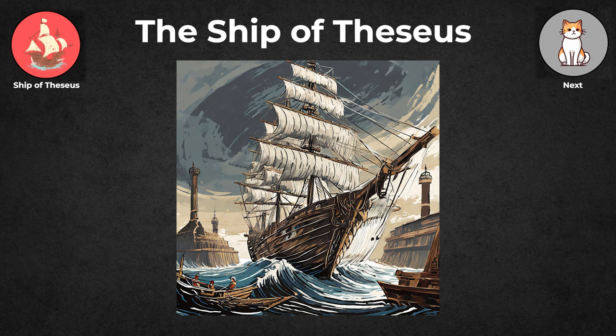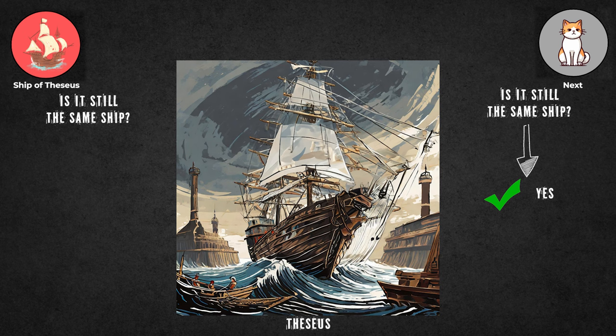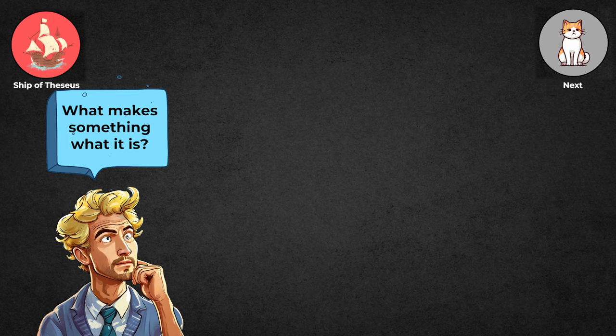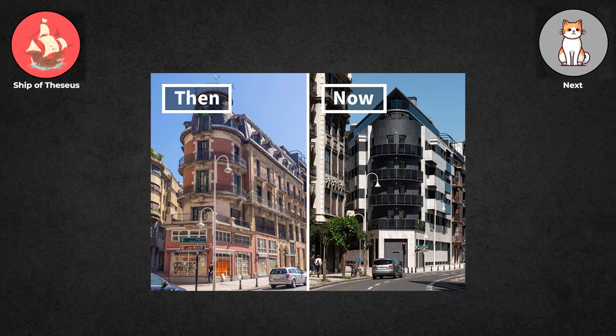The Ship of Theseus is a thought experiment that asks if something stays the same when you change all its parts. Imagine you have a ship named Theseus. Over time, every piece of it gets replaced with new ones. Is it still the same ship? Some say yes because it still looks and does the same stuff, but others say no because every piece is different. This makes us think about what makes something what it is, even if it changes a lot. It's like wondering if you're still you after changing every part of your body. Imagine a historic building that has been renovated over centuries, with each original brick replaced. Is it still the same building with all new materials?